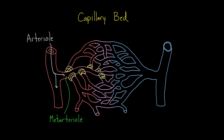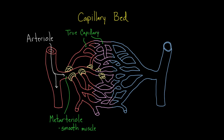The reason it's called a metarteriole is that if you look inside the wall of this vessel, it actually has some smooth muscle. By definition, this is not a true capillary because it has smooth muscle in the wall. The true capillaries are the vessels out here. When we use the term 'true capillary,' we're distinguishing them from the metarteriole.